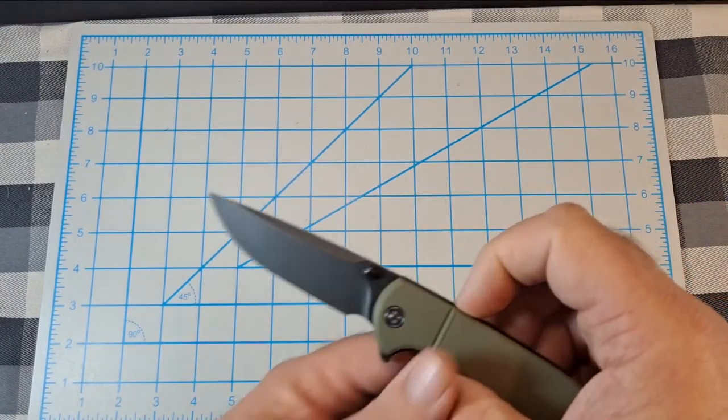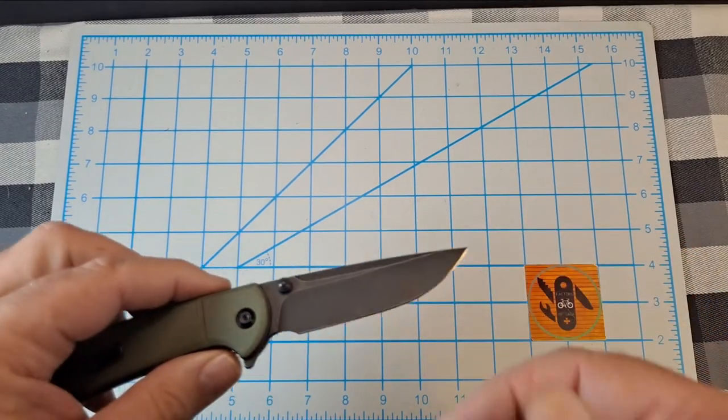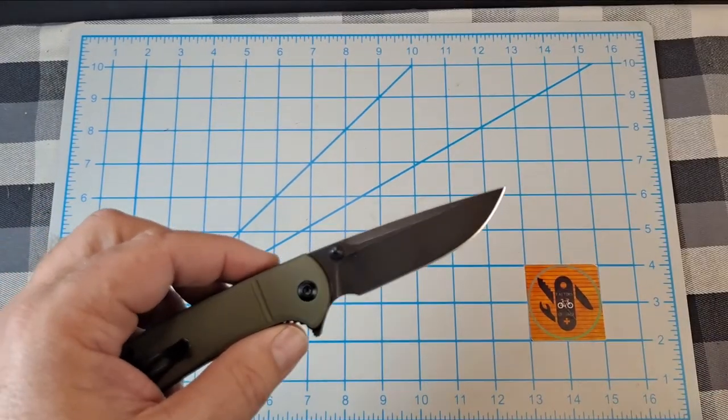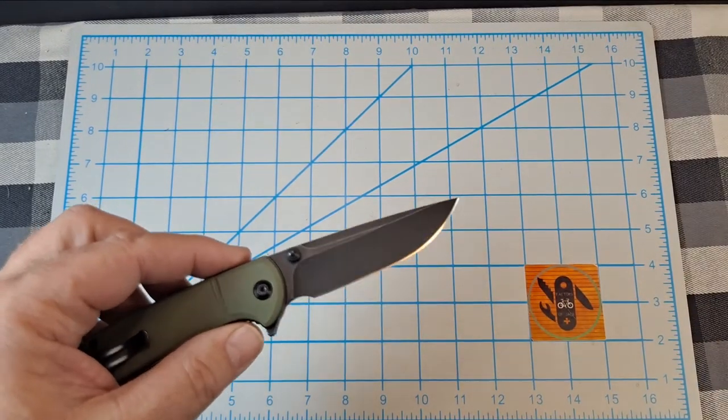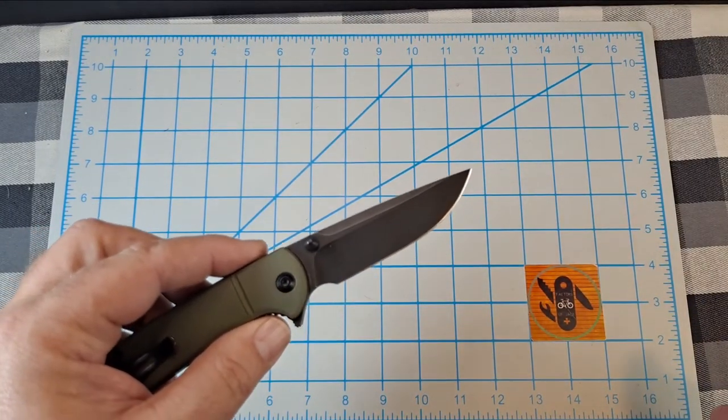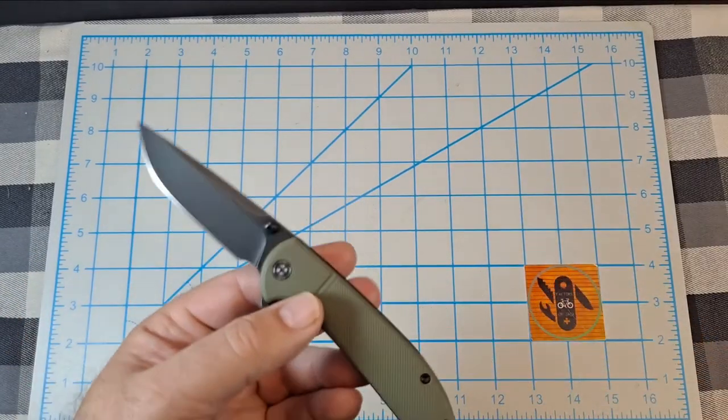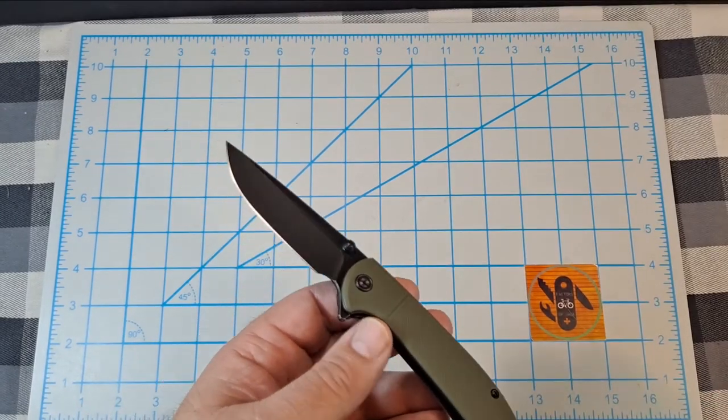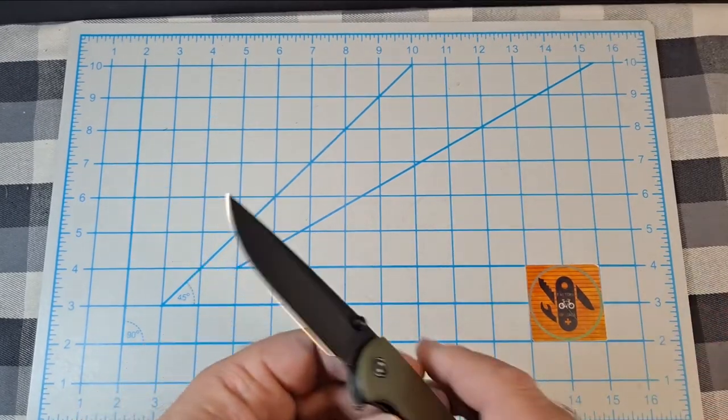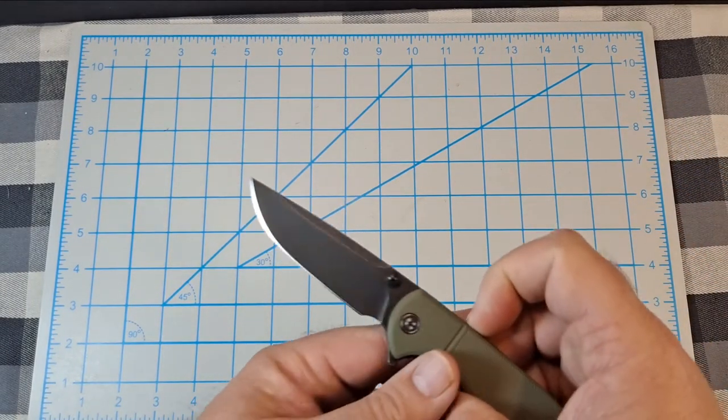About this, which you can also throw over to the Brazen or the Ortis, it's got 9CR 18MOV. Edge retention is not as good as D2. It's more corrosion resistant than D2. I'm kind of sick of D2. I find D2 a more pain in the butt to sharpen. It obviously lasts, the edge lasts longer, but yeah, I like 9CR 18MOV.